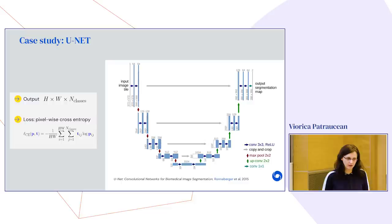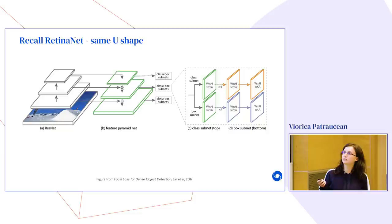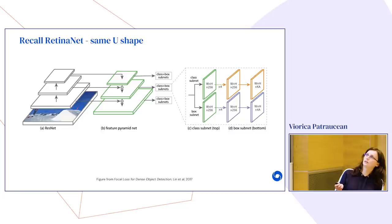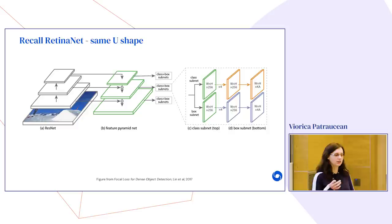Recall the RetinaNet object detector I showed earlier — the hierarchy of features. You may recognize it has the same U-shape as U-Net: an encoder part followed by a decoder with upsampling and long skip connections from corresponding encoder levels. This shows how flexible these models are — the same architectural ideas are reused across different tasks, from segmentation to detection.